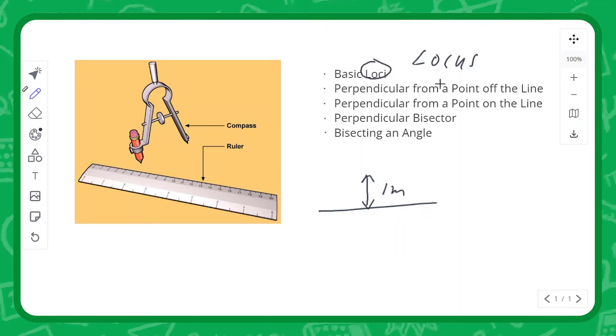You might be able to imagine that the locus of points one meter from this line is another parallel line exactly one meter away. That's just what locus means, the locus of points, the collection of all of the points.